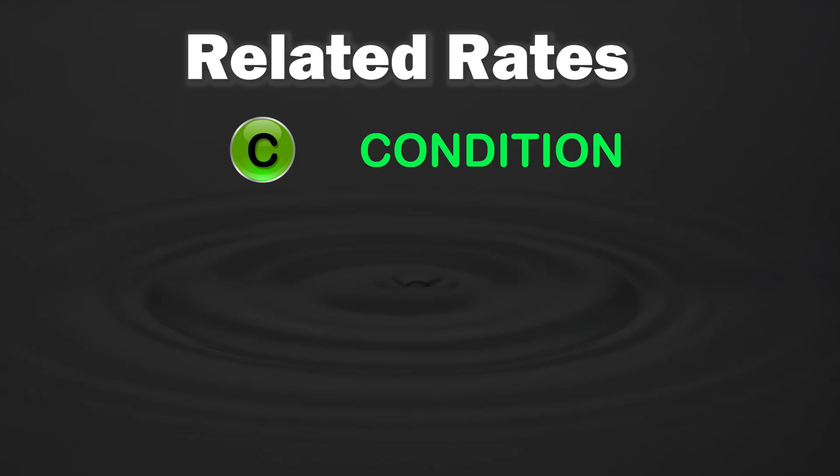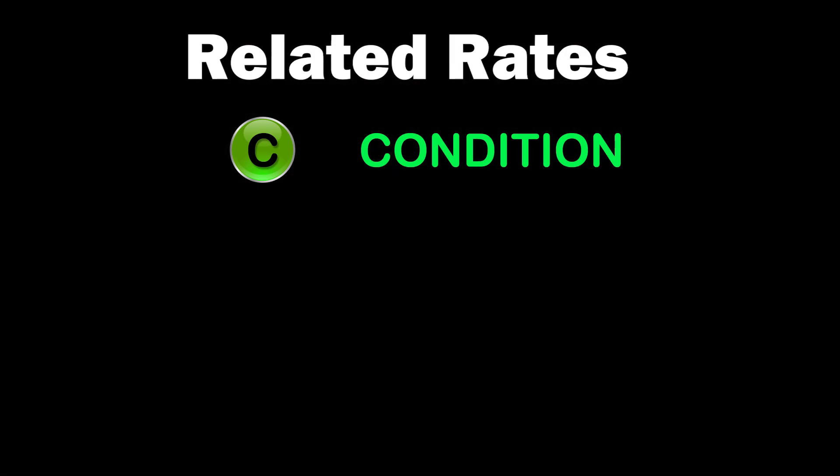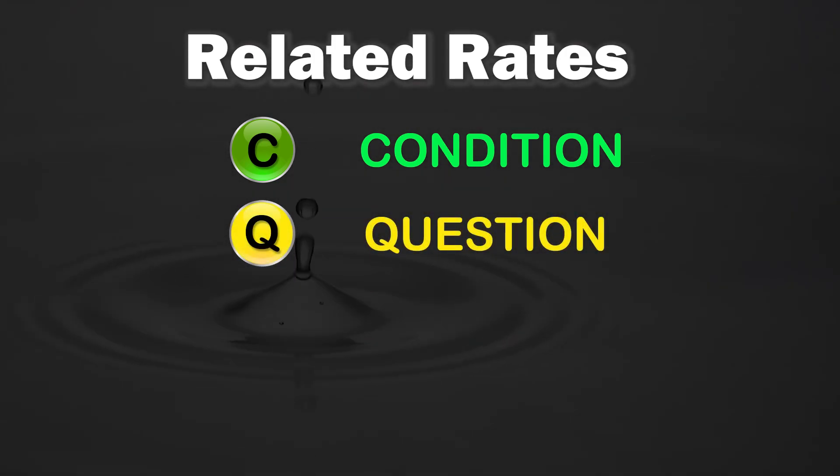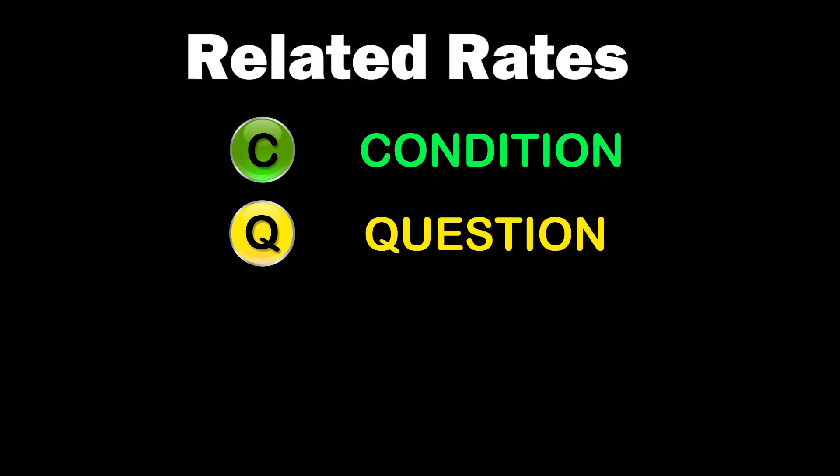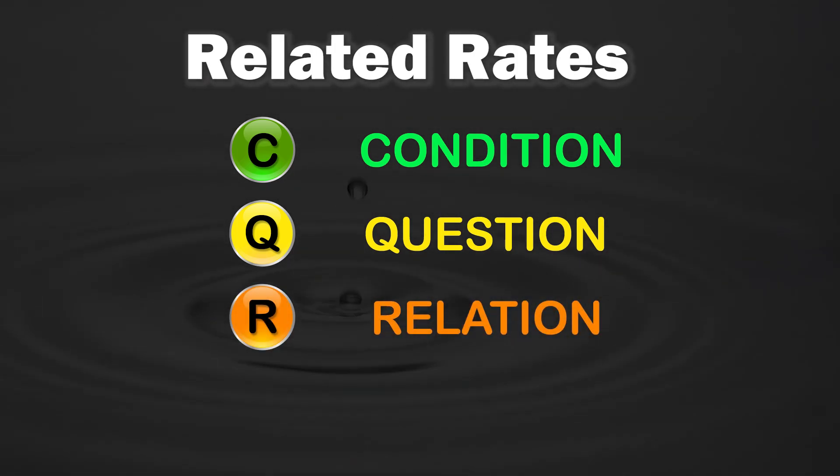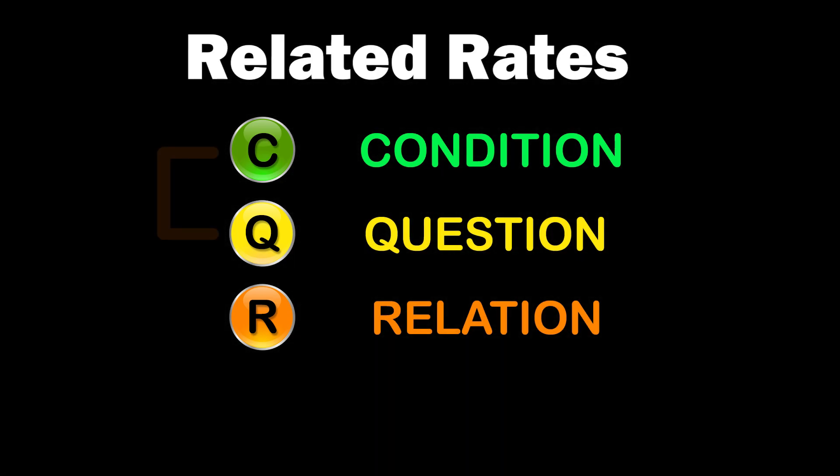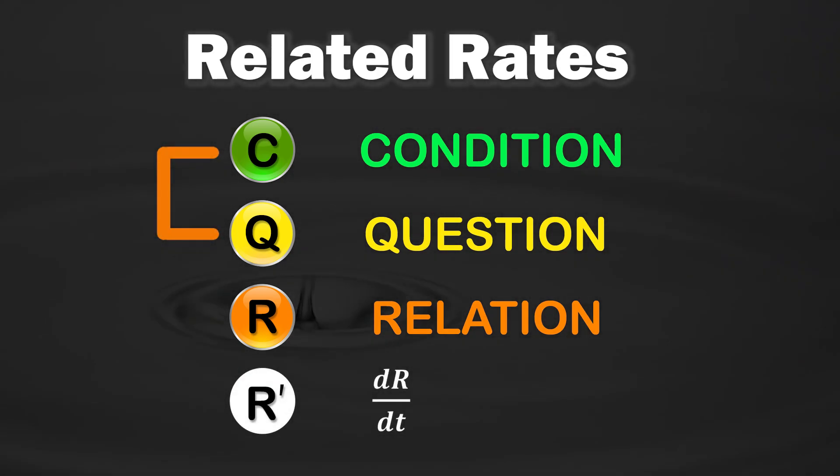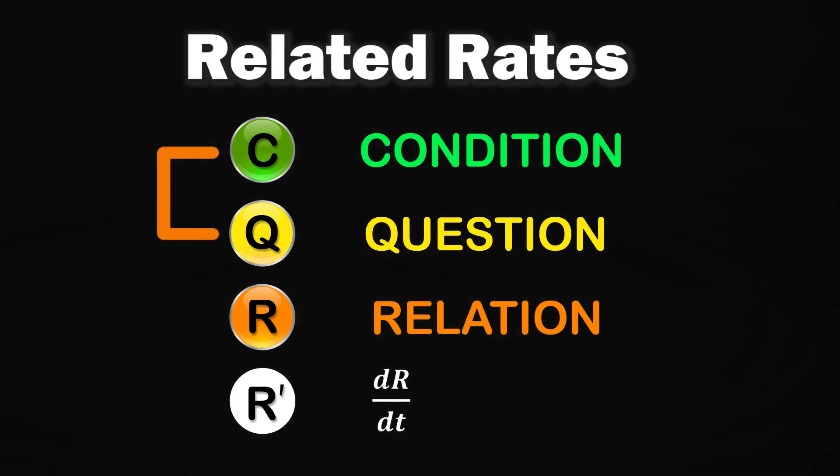First, condition. Find out what condition is given in the problem. Second, question. Identify what the problem is asking for. Third, relation. Try to relate the variables given in the condition and question. Lastly, differentiate the relation with respect to time.